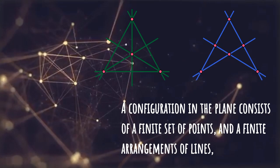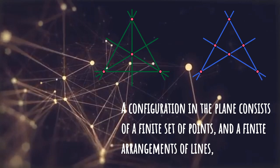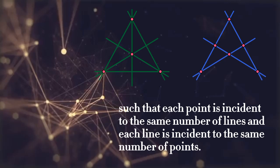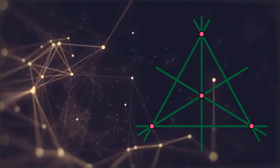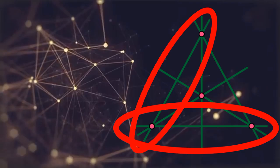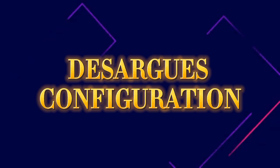each point is incident to the same number of lines and each line is incident to the same number of points. So a configuration is an incidence structure of V points and V lines such that there are R lines through each point, R points on each line, and two lines meet in at most one point.